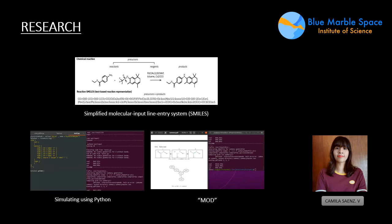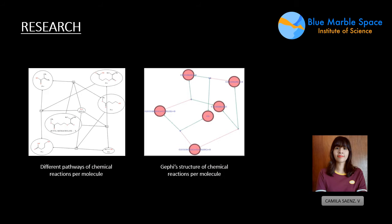In my research, I use the notation SMILES for chemical compounds and then I use Python to simulate it with a software called MOD. We have different pathways for chemical reactions, and our chemical network is fitted with reaction rules — that's what I've been working on.